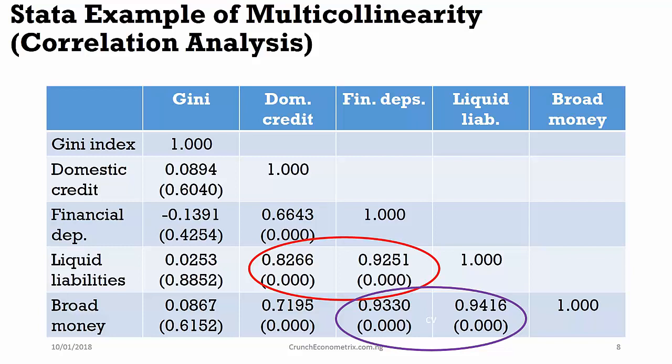We can say that multicollinearity exists among liquid liabilities and domestic credit. Same explanation goes with broad money. Broad money exhibits high collinearity of 0.93 with financial deposits and 0.94 with liquid liabilities. So, there is multicollinearity among broad money, financial deposits, and liquid liabilities.